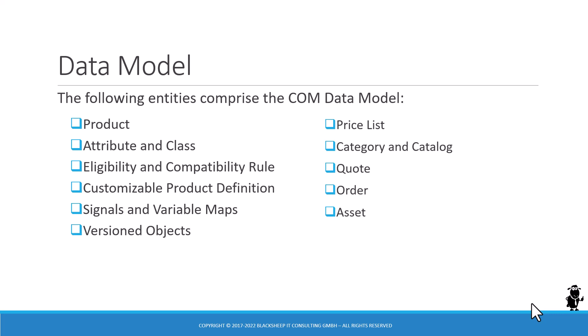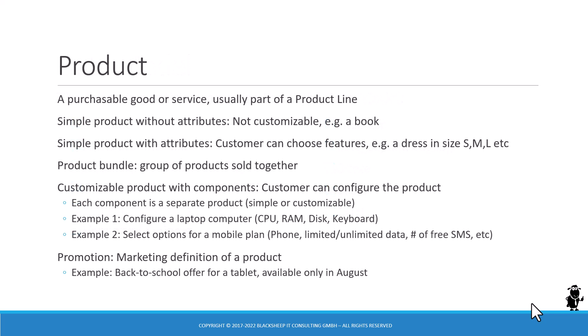Now let's turn our attention to the data model. I'm using the word data model here in the widest sense — not just talking about business components or business objects, although everything you see here is expressed in those terms. We want to talk about the key entities and concepts that make up the logical data model. Each of these you will discover in the different chapters of these classes. A product — probably don't need to tell you too much about what a product is — could be a physical object you purchase, a service you purchase, or even a human being who delivers that service. It's some kind of product, typically expressed as part of a product line.